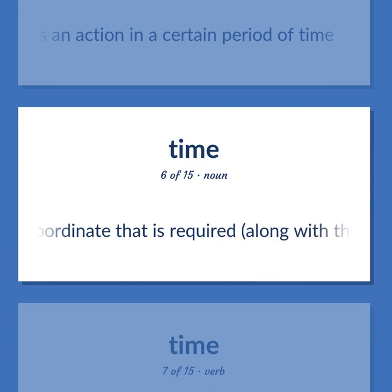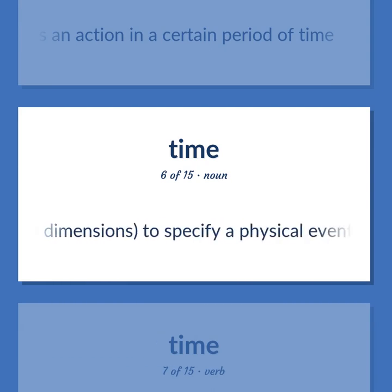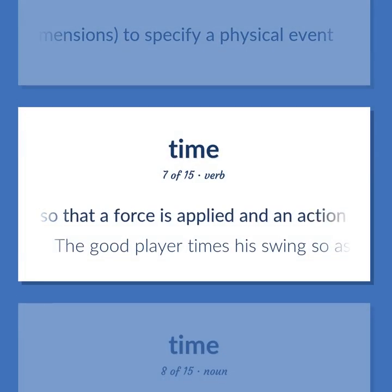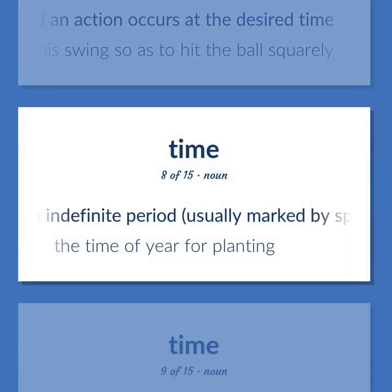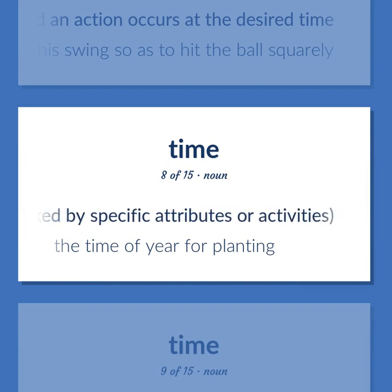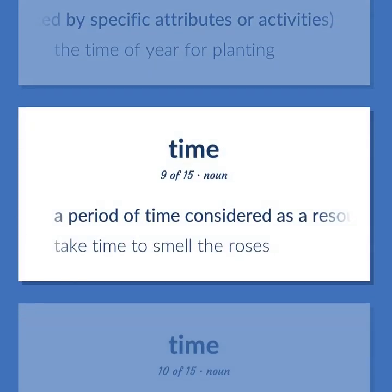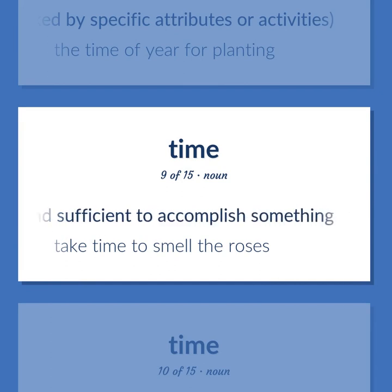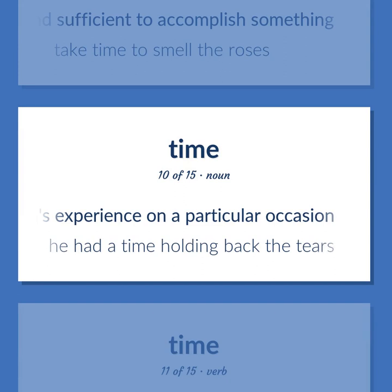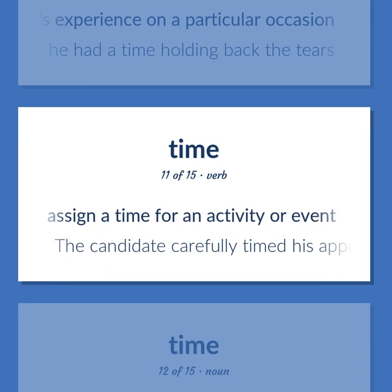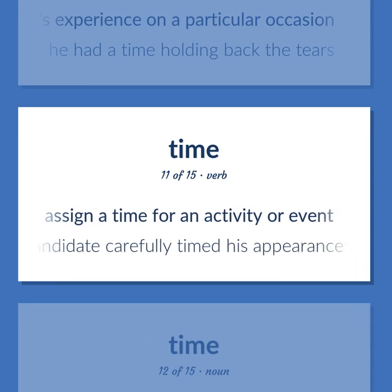The fourth coordinate, required along with three spatial dimensions, to specify a physical event. Adjust so that a force is applied and an action occurs at the desired time. The good player times his swing so as to hit the ball squarely. An indefinite period, usually marked by specific attributes or activities. The time of year for planting. A period of time considered as a resource under your control and sufficient to accomplish something. Take time to smell the roses. A person's experience on a particular occasion. He had a time holding back the tears. Assign a time for an activity or event. The candidate carefully timed his appearance at the disaster scene.